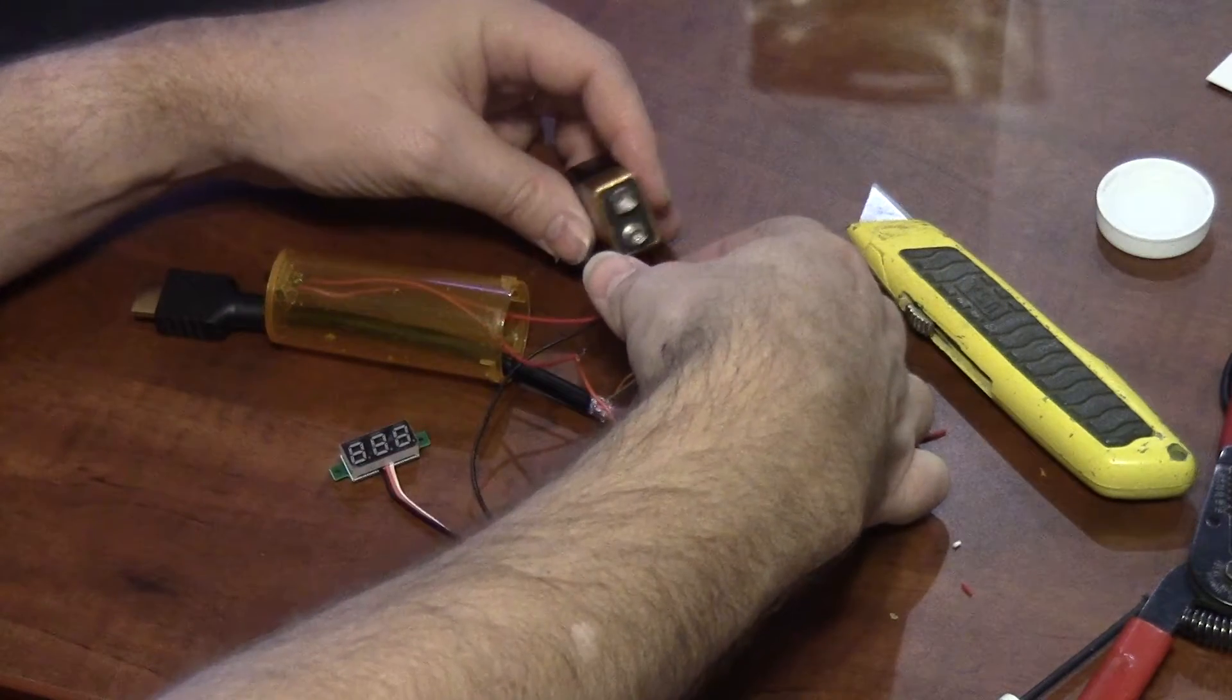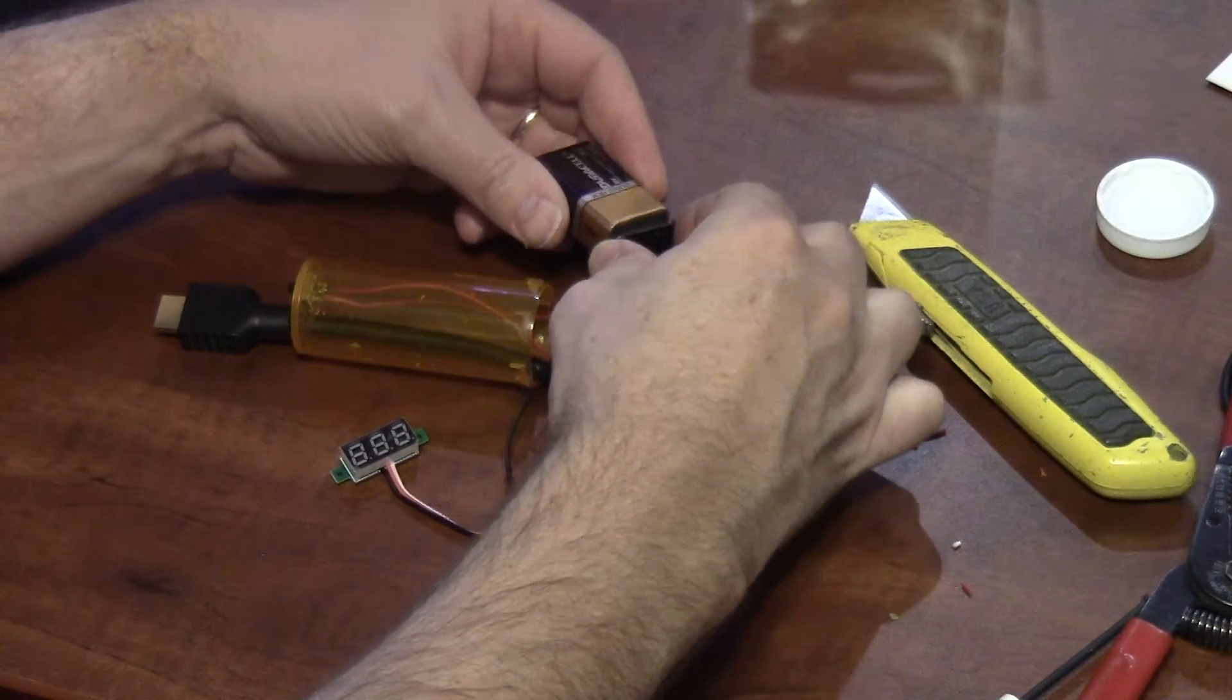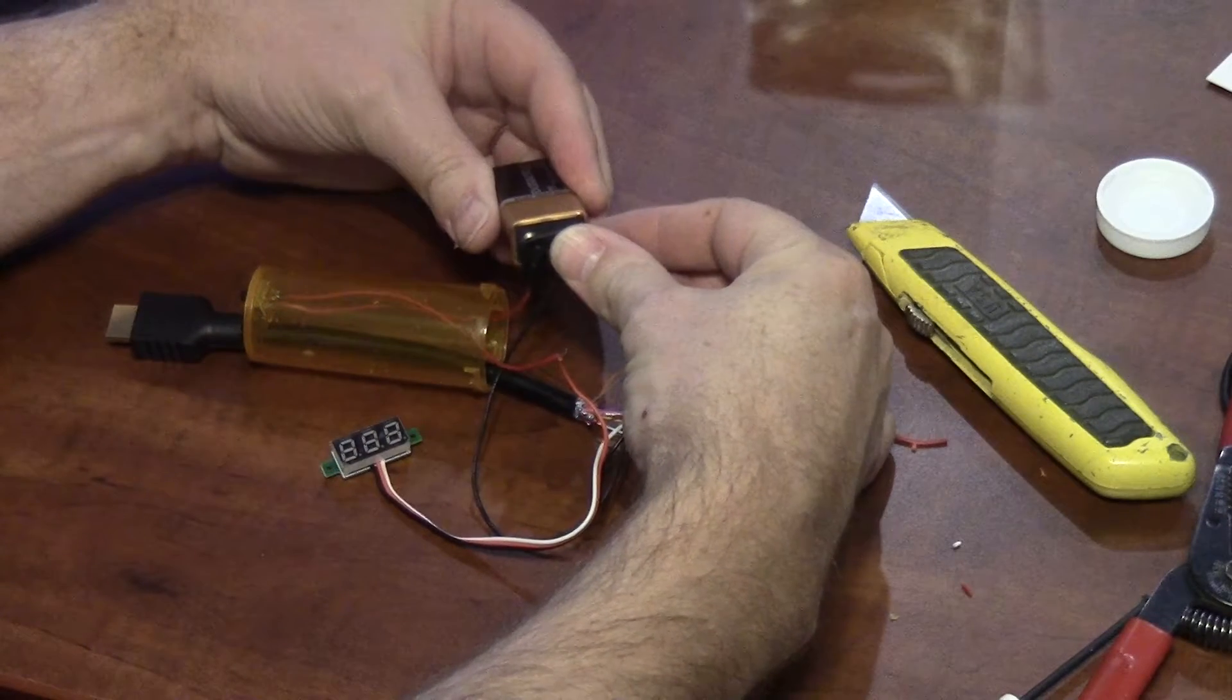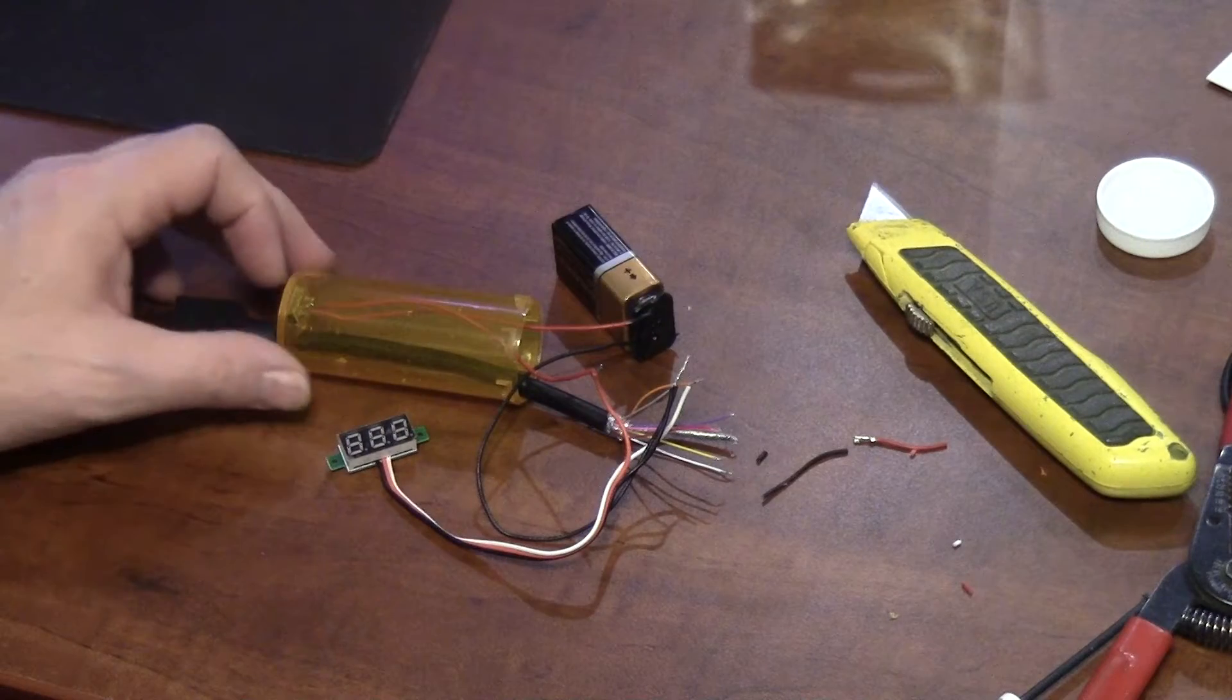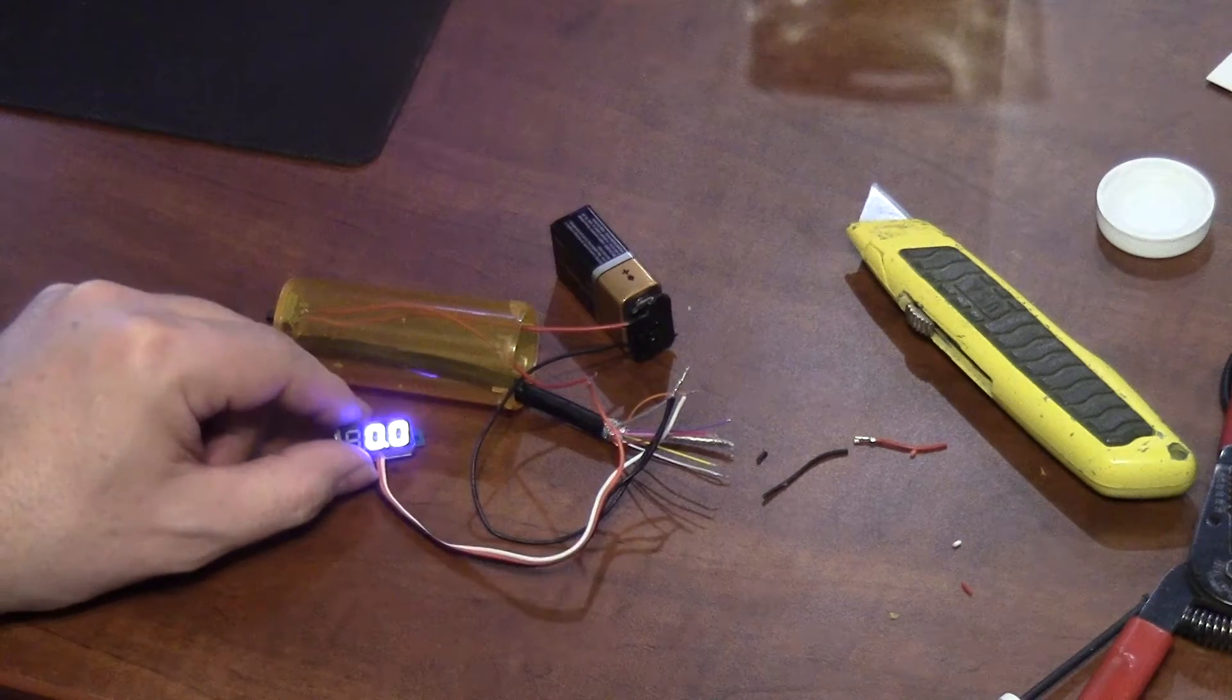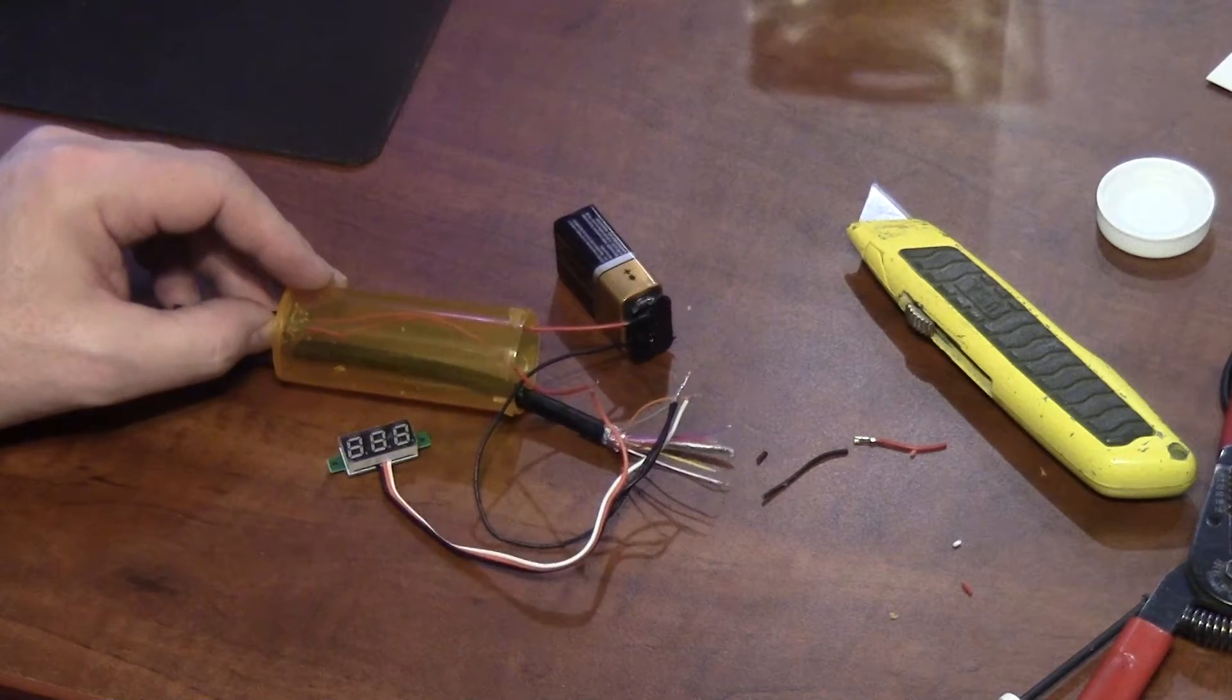So here I am, everything's completely wired. I'm plugging the battery into the battery clip so we can test it for the first time. Unfortunately, my liquid electrical tape wasn't quite dry yet so I got a whole bunch on my thumb there.